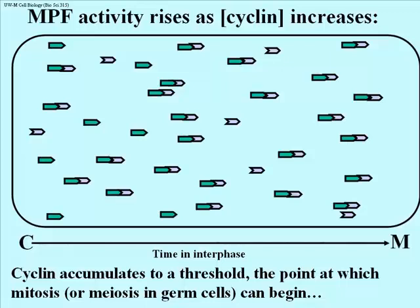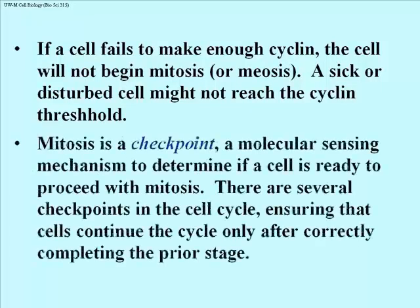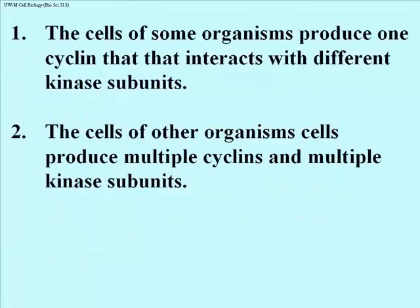Only after reaching this threshold can mitosis begin. If a cell is disturbed or receives conflicting chemical signals from outside the cell, it might not produce enough cyclin, thereby delaying mitosis until the cell is ready. Regulation of progress through the cell cycle occurs at several such molecular checkpoints, each controlling activity ensuring the correct completion of a prior stage of the cycle. The cells of lower organisms use a single cyclin molecule to activate different CDKs, or cyclin-dependent kinases, at different cell cycle checkpoints.